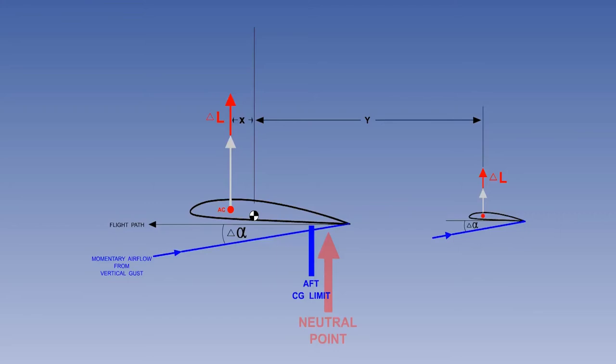Consequently, to ensure minimum ability for the pilot to manoeuvre the aircraft in pitch and to ensure the stick forces are not too high, a forward CG limit is required. The forward CG limit gives maximum longitudinal static stability and guarantees minimum acceptable manoeuvrability and maximum acceptable stick forces. The aft CG limit gives minimum acceptable longitudinal static stability and gives maximum manoeuvrability and minimum acceptable stick forces.